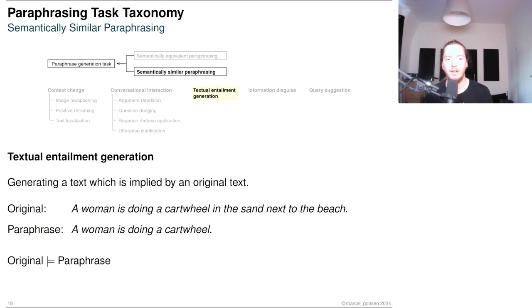The goal of textual entailment generation is to generate a text which can be inferred from another text. If the number of statements that can be inferred from both texts is high enough, this is a paraphrasing task. In the example, the paraphrase is entailed in the original.